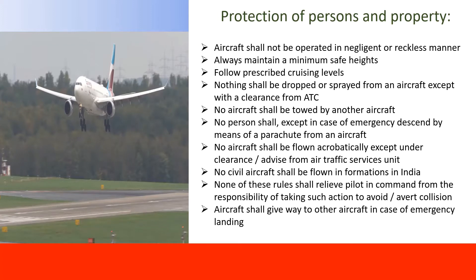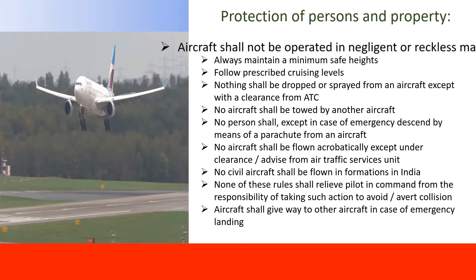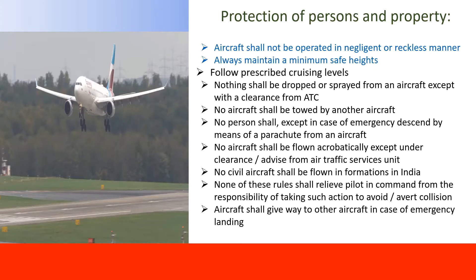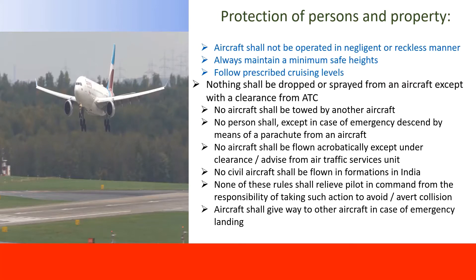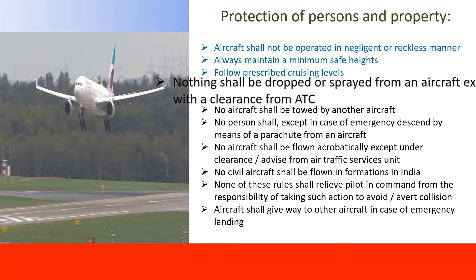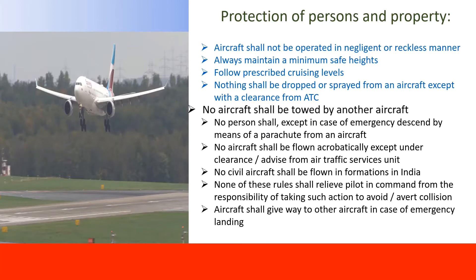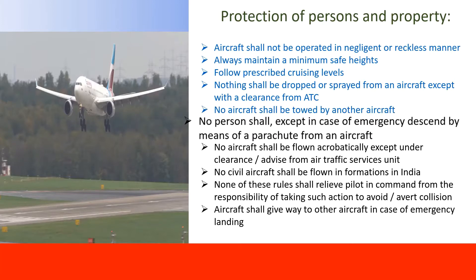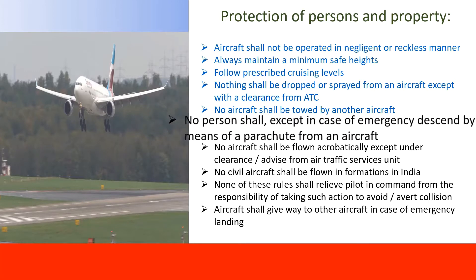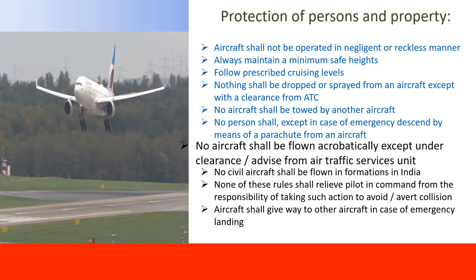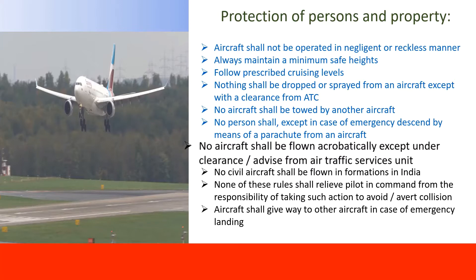Rules regarding protection of persons and property: Aircraft shall not be operated in a negligent or reckless manner. Always maintain a minimum safe height. Follow prescribed cruising levels. Nothing shall be dropped or sprayed from an aircraft except with clearance from ATC. No aircraft shall be towed by another aircraft. No person shall, except in case of emergency, descend by means of a parachute from an aircraft. No aircraft shall be flown acrobatically except under clearance.